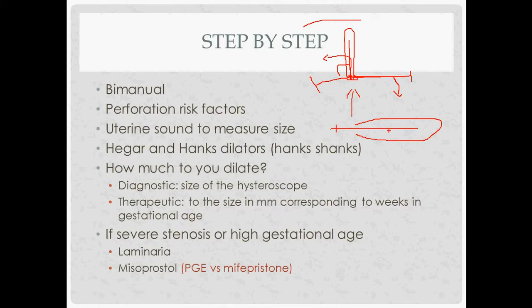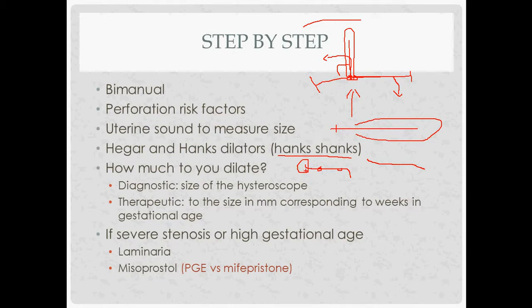The Hager and Hanks dilators are what you use for actual dilation — remember which is which by thinking 'Hanks shanks.' Hanks have two little circles and a more pronounced curve at the end; Hager ones have a gentler curve. When dilating, start with the smaller side of a dilator, remove it, put in the other side which is slightly bigger, grab a new tool, and keep working your way up until you reach the size you need.